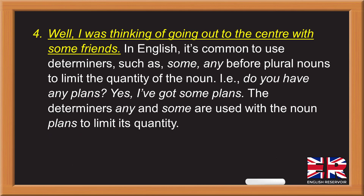4. 'Well, I was thinking of going out to the center with some friends' — in English, it's common to use determinants such as 'some' and 'any' before plural nouns to limit the quantity of the noun. For example: 'Do you have any plans? Yes, I've got some plans.' The determinants 'any' and 'some' are used with the noun 'plans' to limit its quantity.